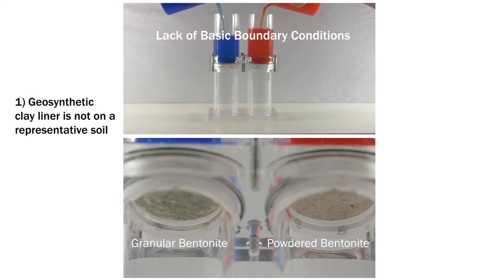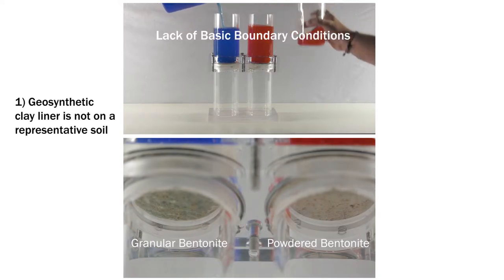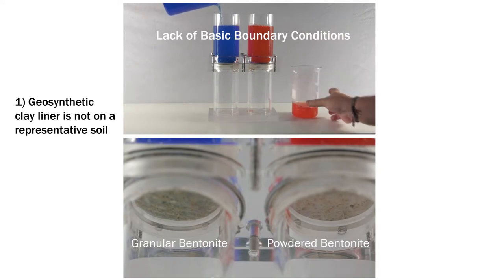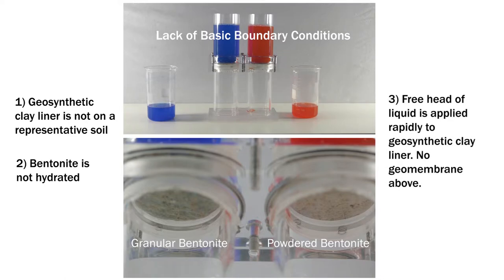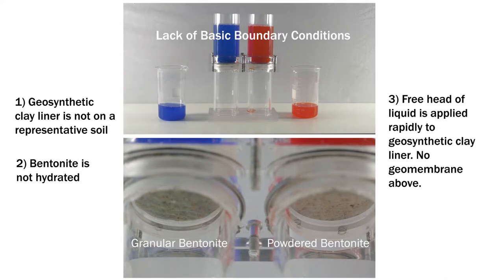Note how many basic boundary conditions from the field are not being used: 1. We are not placing the geosynthetic clay liner over a representative soil. 2. There has been no hydration of the bentonite before the test. And 3. A free head of liquid has been rapidly placed directly upon the geosynthetic clay liner. Further, and contrary to common composite lining systems, there is no geomembrane above. Still, no leakage is observed, save for some that seems to have slipped around the side of the powdered bentonite sample.